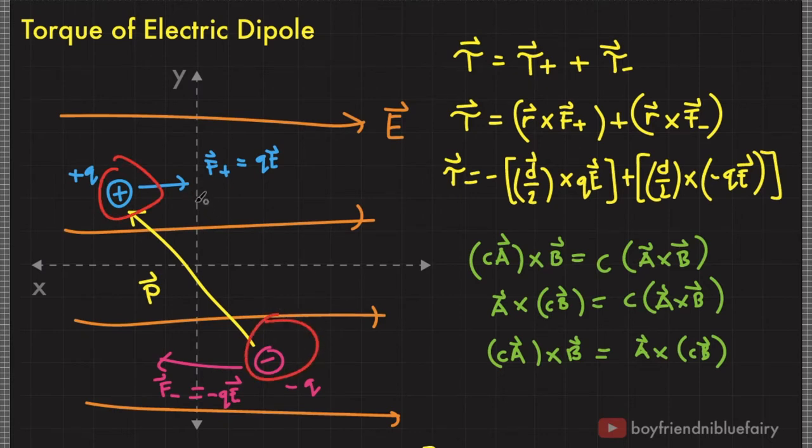Recall that the energy associated with position is potential energy. Hence, when electric dipole rotates because external electric field applied work on it, its potential energy changes as well.